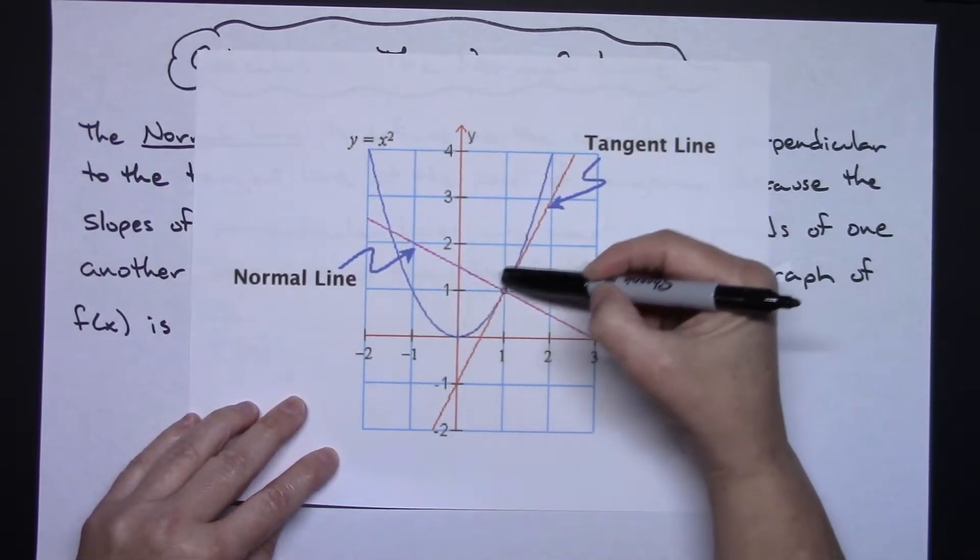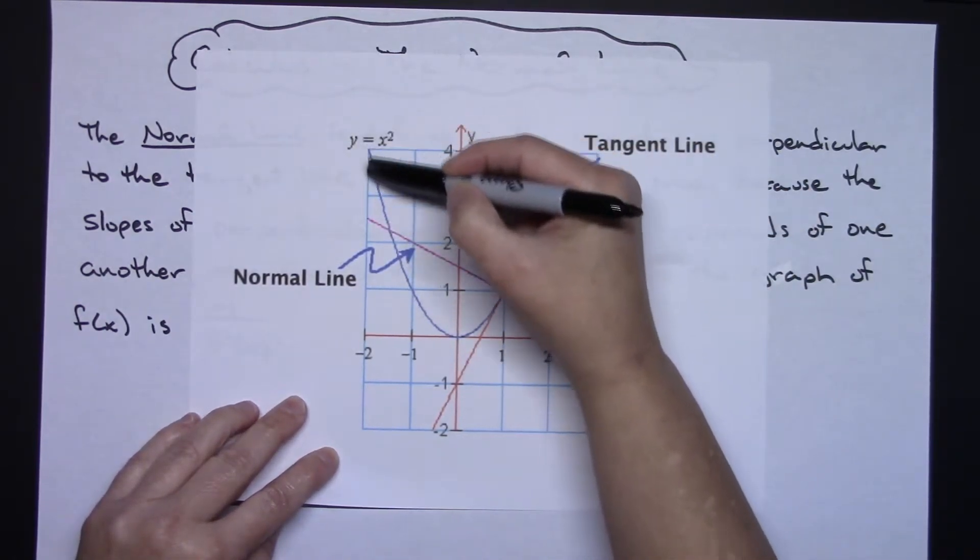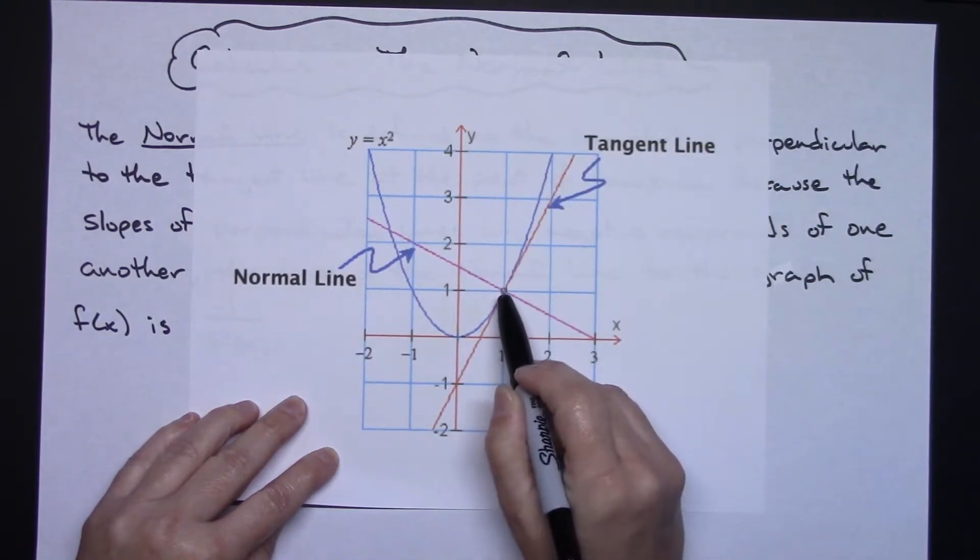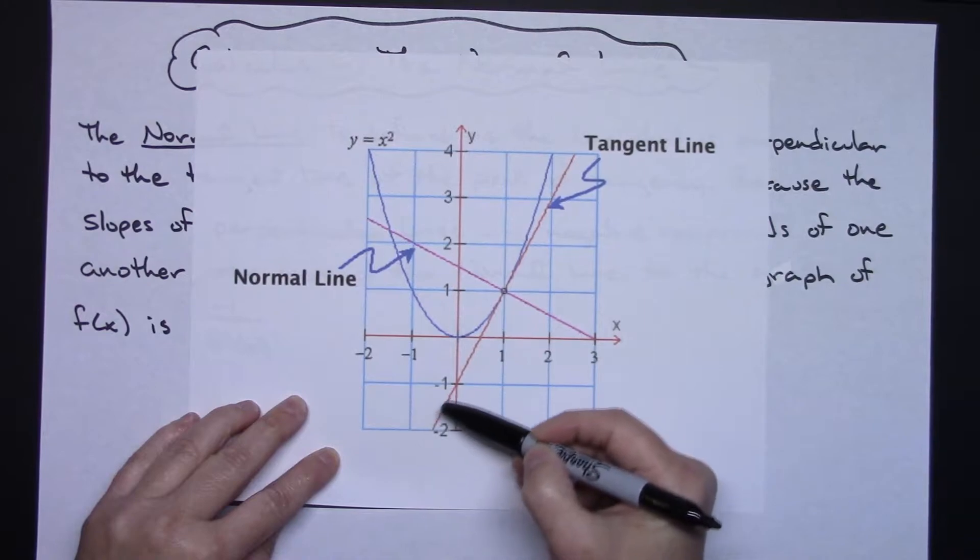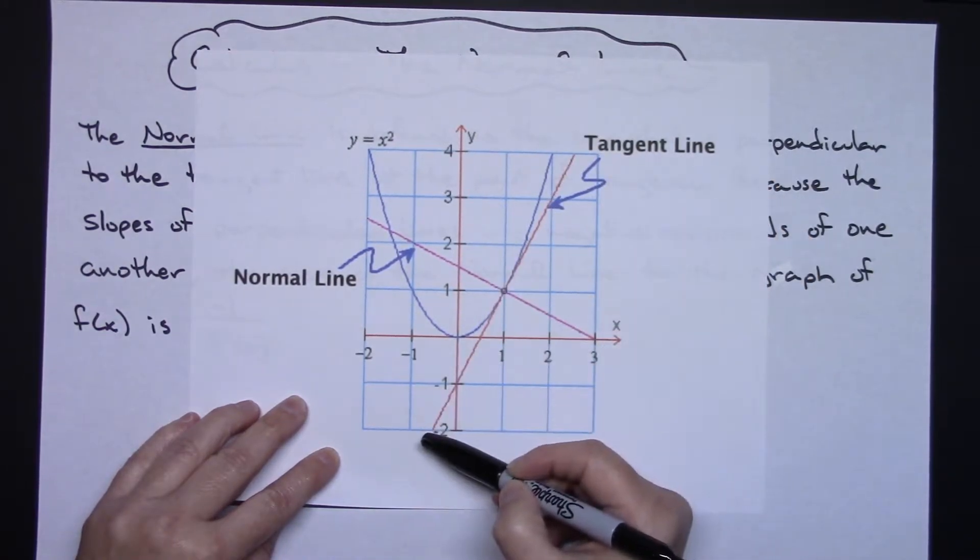Let's say I've got the regular graph of y equals x squared right here. And then maybe say at the point (1,1), here is my tangent line. So we draw the tangent line right there.